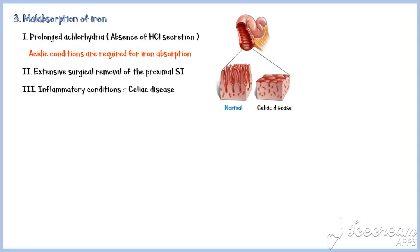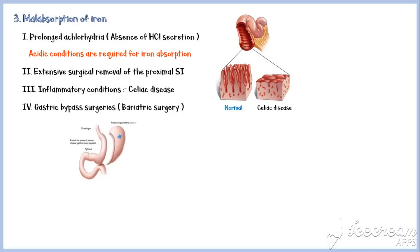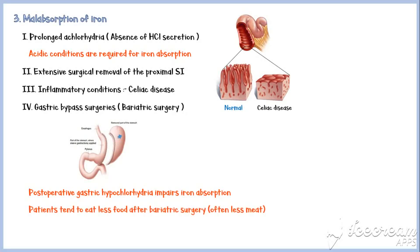Gastric bypass surgeries, such as bariatric surgery, may also cause malabsorption of iron because post-operative gastric hypochlorhydria impairs the absorption of iron. In addition, patients tend to eat less food, often less meat, after bariatric surgery, which may ultimately lead to iron deficiency anemia.